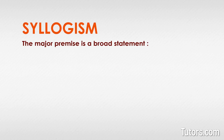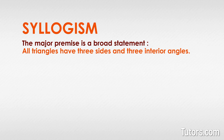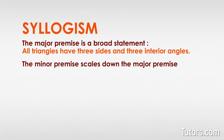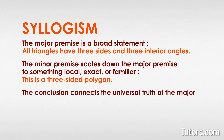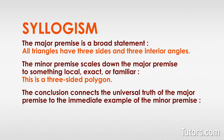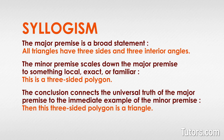In a syllogism, the major premise is a broad statement, such as: all triangles have three sides and three interior angles. The major premise is often a conditional statement beginning with 'if.' The minor premise scales down the major premise to something local, exact, or familiar, such as: this is a three-sided polygon. The conclusion connects the universal truth of the major premise to the immediate example of the minor premise — then this three-sided polygon is a triangle. Conclusions often begin with 'then.'